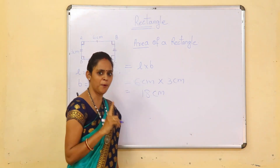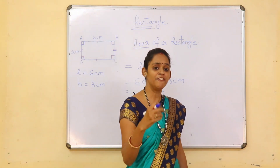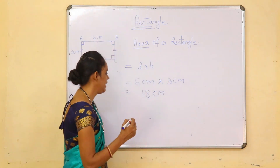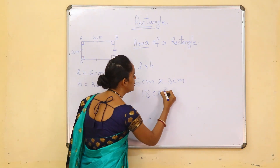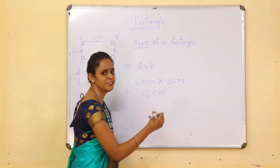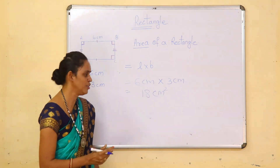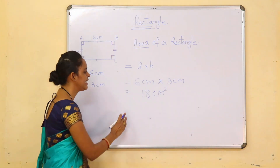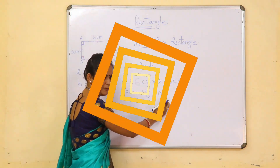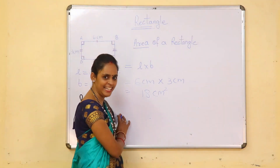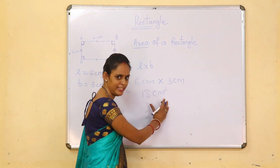Now one more important thing: at the time of writing the value of area, we have to write 18 cm with the symbol of square. This is the area unit. So we can say our answer is 18 square centimeters. Our final answer is 18 square centimeters.